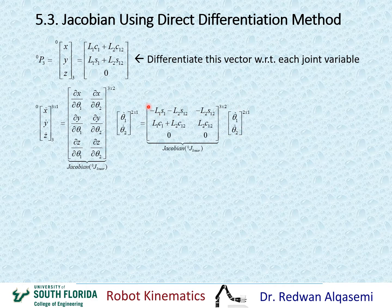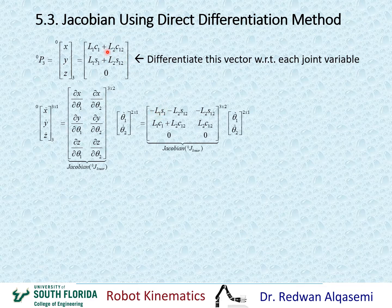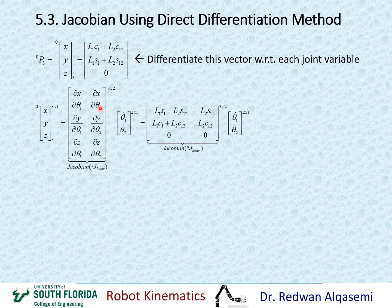We start now doing the partial differentiation. Differentiating X with respect to theta 1: the term L1·C1 becomes negative L1·S1, and L2·C12 becomes negative L2·S12, since differentiation of cosine is negative sine. For X with respect to theta 2: there is no theta 2 in the first term, so that would be 0, and differentiation of L2·C12 with respect to theta 2 gives negative L2·S12.